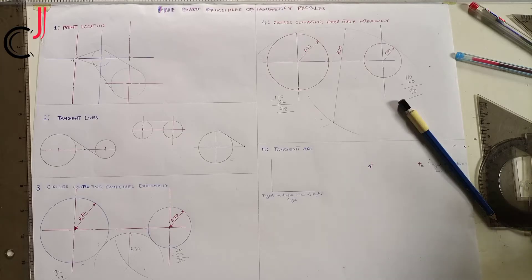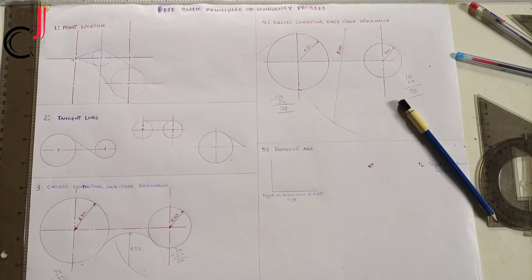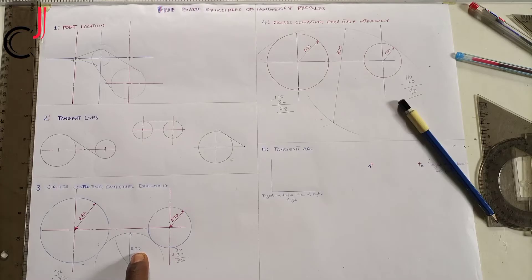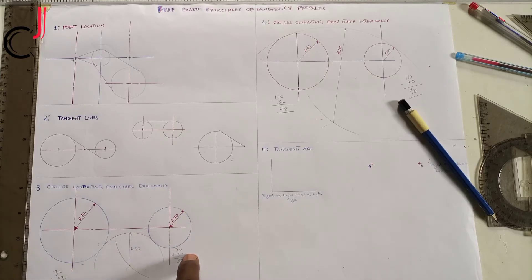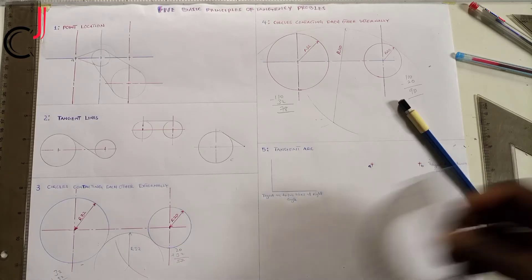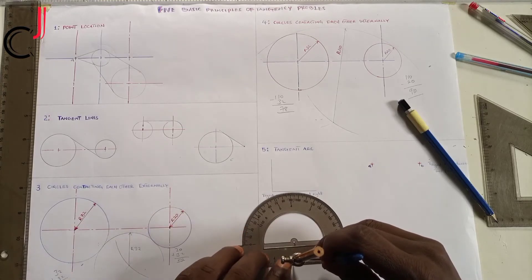The third principle is circles touching each other externally. When circles touch each other externally, you add the radius of the circle and the radius of the circle touching it externally. For example, this small circle has a radius of 20 millimeters and the one touching it externally is 32 millimeters. I add 20 plus 32, which gives me 52 millimeters. Then I take my ruler and pick 52 as my radius.